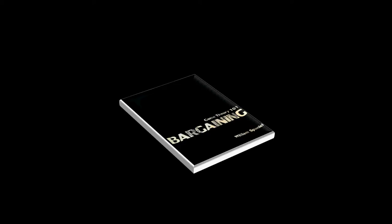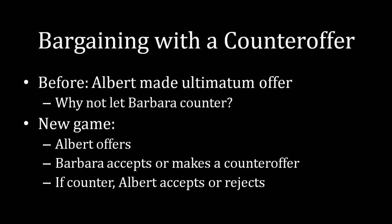Let's briefly talk about where we were versus where we're going. Previously, we've been looking at ultimatum games. In these ultimatum games, Albert has been making an offer to Barbara, which Barbara accepts or rejects. It's a take-it-or-leave-it offer. This leaves an open question though. Why doesn't Barbara have the ability to make counter-offers if she doesn't like the offer that Albert is making to her?